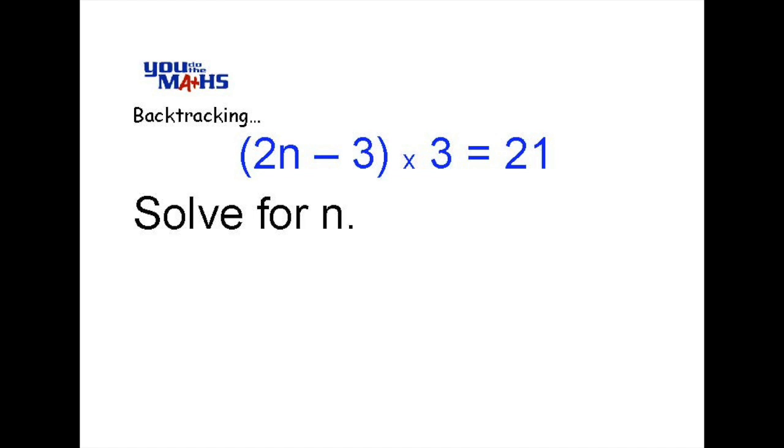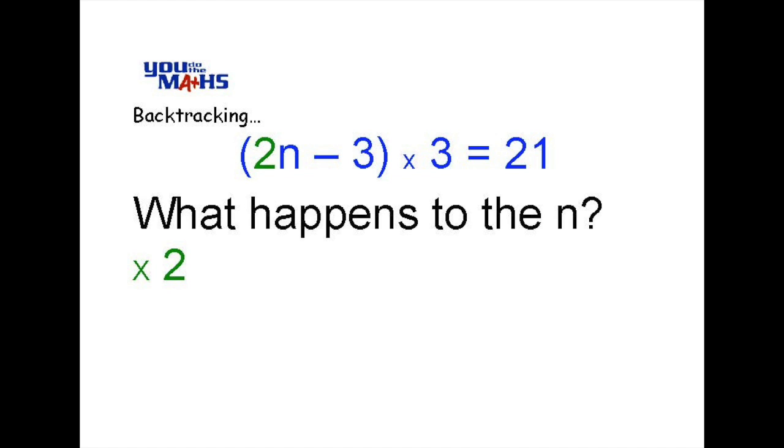The first thing we do for backtracking is ask yourself what happens to the letter n. In this case we can see that it's being multiplied by 2 first. 2n means 2 multiplied by n. So that's the first thing we do if we had to apply an operation to the letter n.